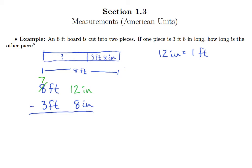So 12 minus 8 is, of course, 4. And then 7 feet minus 3 feet is also 4. So we have 4 feet, 4 inches is the length of the piece after we cut off 3 feet, 8 inches.